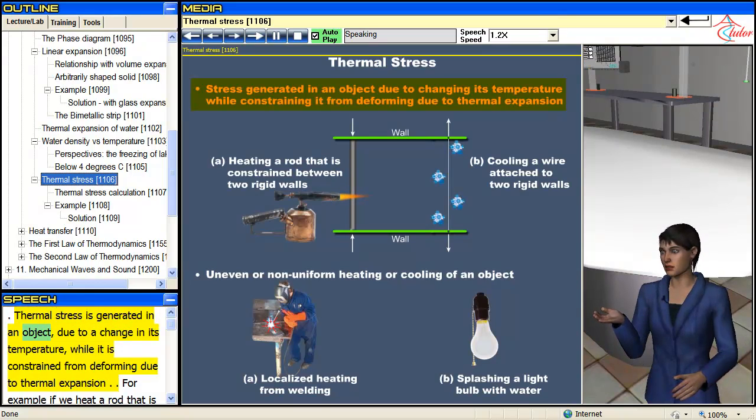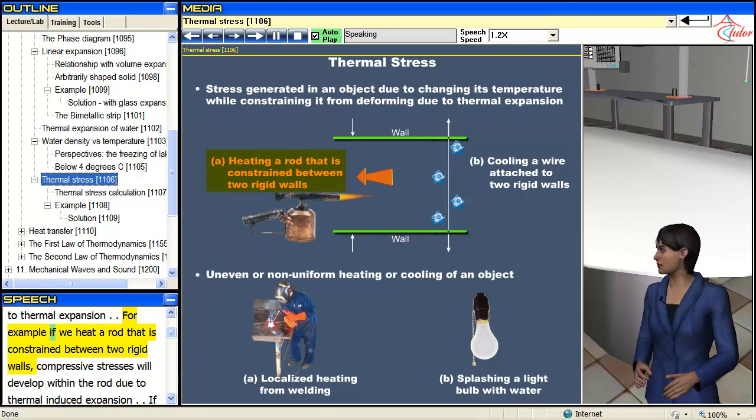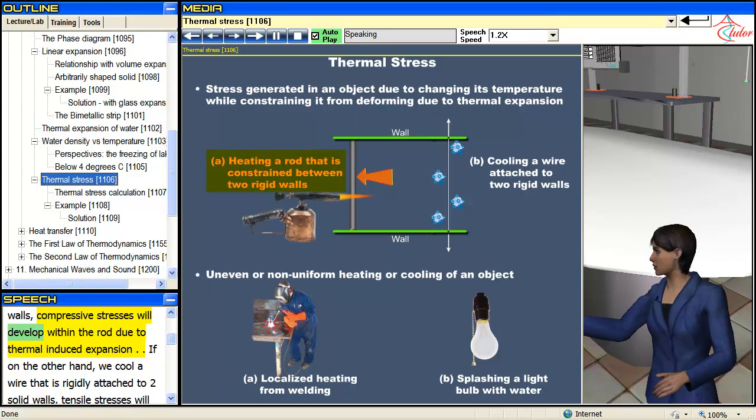Thermal stress is generated in an object due to a change in its temperature while it is constrained from deforming due to thermal expansion. For example, if we heat a rod that is constrained between two rigid walls, compressive stresses will develop within the rod due to thermal induced expansion.